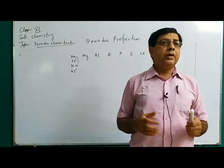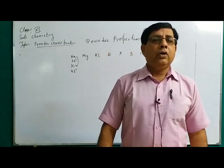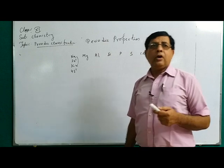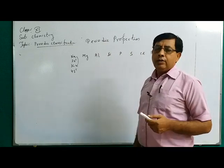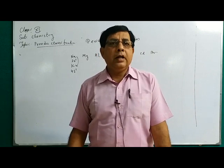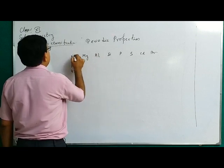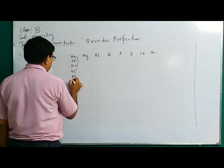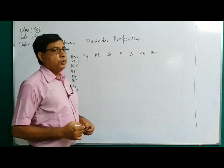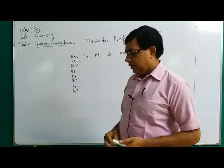Properties of elements which reappear after a certain interval of time, when we arrange the elements in order of increasing atomic number, are called periodic properties. The reason for periodicity is that when we arrange elements in order of increasing atomic number, after certain intervals, elements with similar valence shell electronic configuration reappear. All Group 1 elements have configurations sodium 3s1, potassium 4s1, rubidium 5s1, cesium 6s1 — all have the same number of valence electrons, so their periodicity reappears. The reason for periodicity is the appearance of the same number of valence electrons.